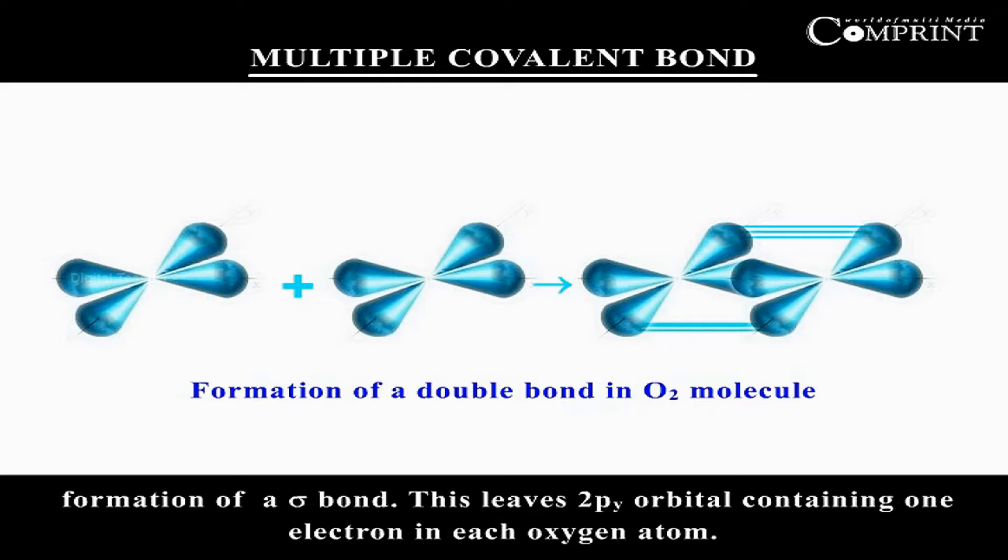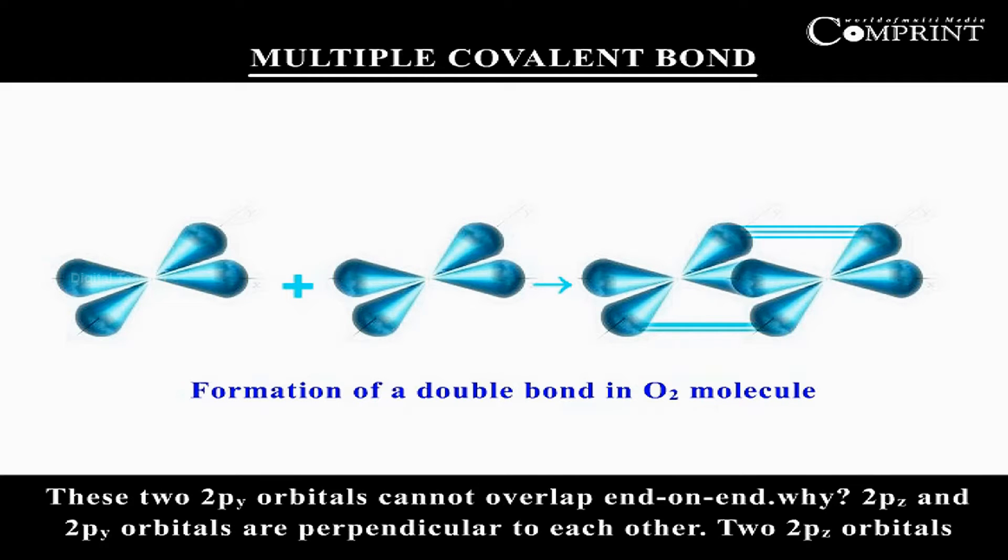This leaves 2py orbital containing one electron in each oxygen atom. These two 2py orbitals cannot overlap end-on-end. Why? 2pz and 2py orbitals are perpendicular to each other, as shown in the figure.